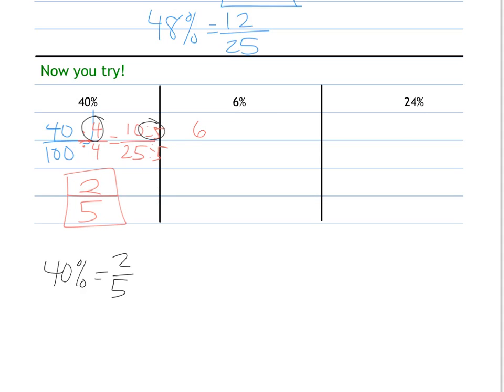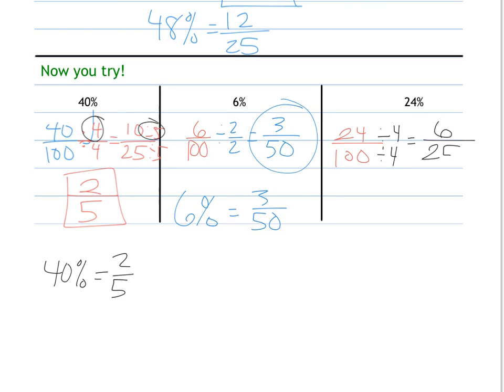6% is 6 out of 100, sharing a factor of 2 for 3/50. 6% is the same as 3/50. 24% or 24 per 100, they share a factor of 4 for 6/25. They do not share any factors other than 1. So 24% is equal to 6/25.